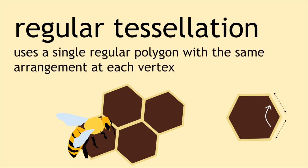However, we also usually require the shapes to come together with the same arrangement at a vertex. So this arrangement of squares would be a regular tessellation, but this brick type arrangement wouldn't. And although rectangles tessellate, since they aren't regular, we wouldn't refer to this as a regular tessellation either.